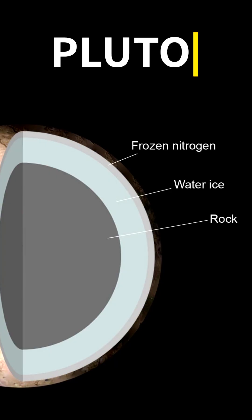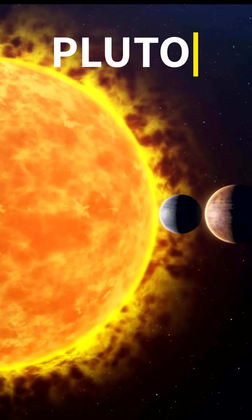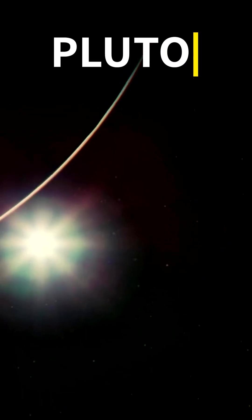It takes about 248 Earth years to complete one orbit around the Sun. Pluto is tidally locked with its largest moon, Charon.